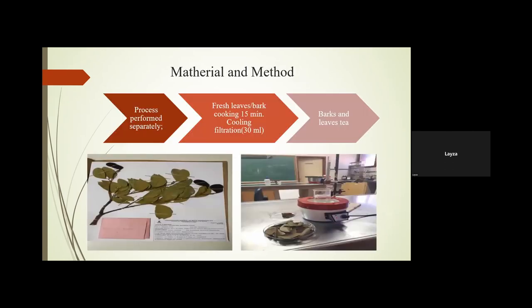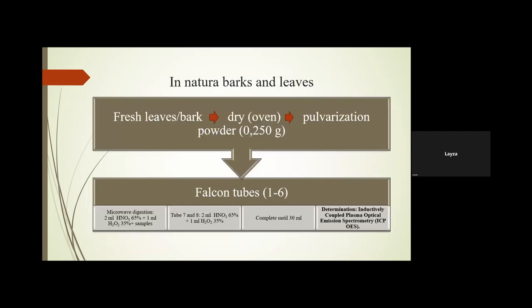First, we processed the leaves and barks separately. They were cooked for 15 minutes, and after cooling we made filtration — almost 30 milliliters from the barks and leaves — to obtain the bark and leaf teas. For the in natura barks and leaves, we cut the fresh material, dried it in an oven, and pulverized it into powder, placing it in falcon tubes. These went to microwave digestion, with blank tubes containing only water and acid. Samples were then completed to 30 milliliters and analyzed by Inductively Coupled Plasma Optical Emission Spectrometry (ICP-OES).